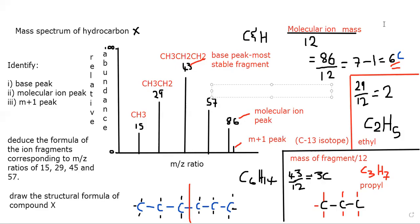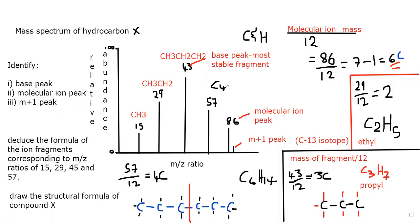Let's do 57. So 57 divided by 12 gives 4.75 — just pay attention to the 4. This fragment should have 4 carbons. In an alkane it would be C4H10, hence the fragment is C4H9. So you can quickly figure out the formula of these fragments simply by dividing by 12.